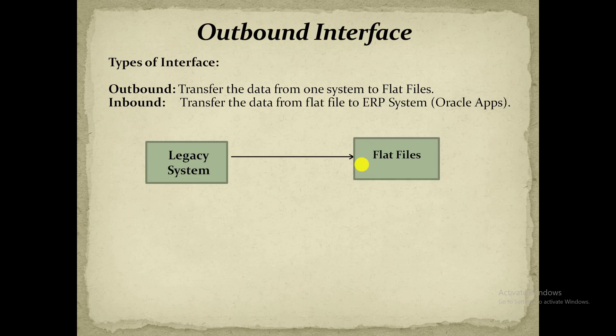The second one is inbound interface. So inbound interface is nothing but transferring the data from a flat file to the ERP system. Outbound process is really simple — in the outbound process we just write a package or procedure and fetch the data into a comma separated or CSV file.